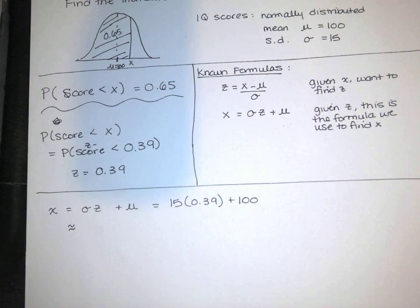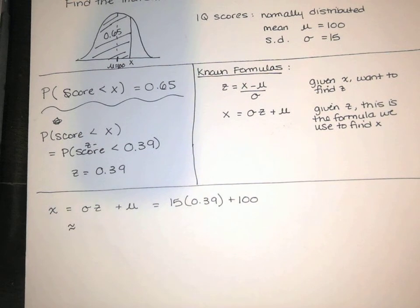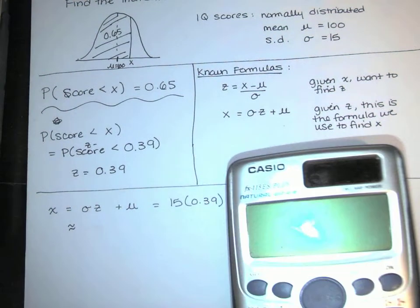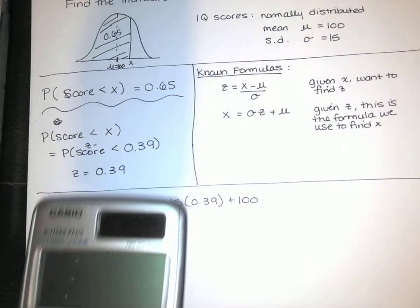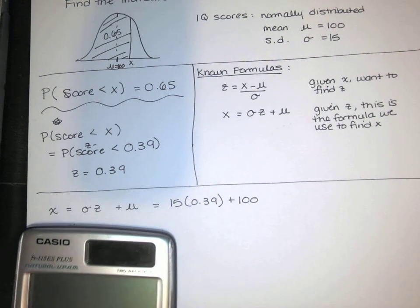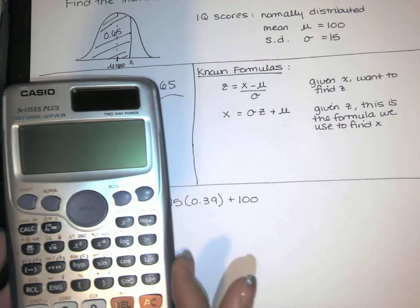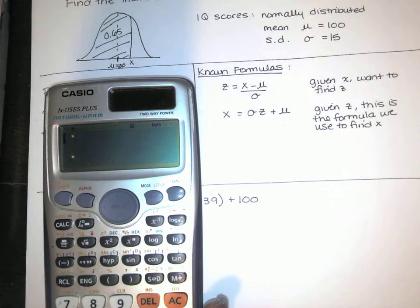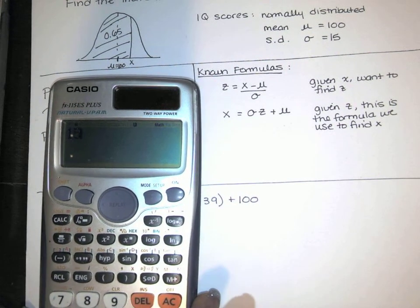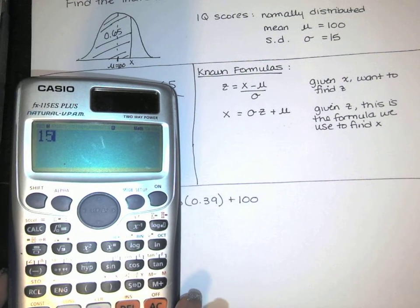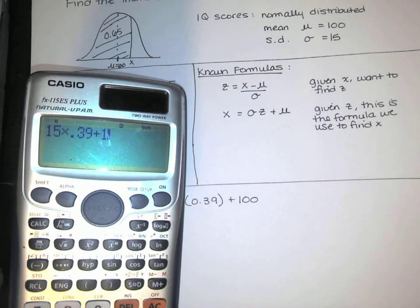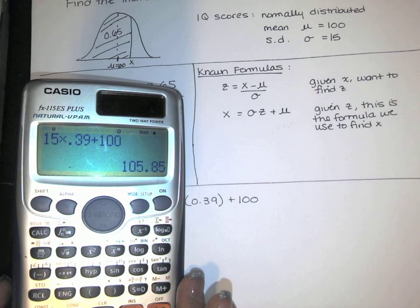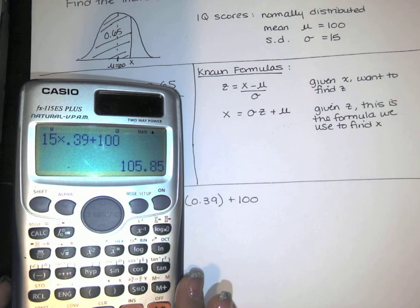And I need to get my calculator. It's in my purse. Just step away for just a moment. All right. So I've got 15 times 0.39 plus 100. So that's an IQ score of 105.85.